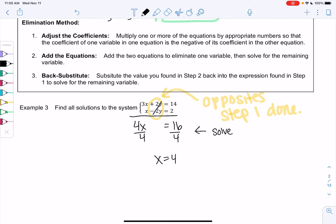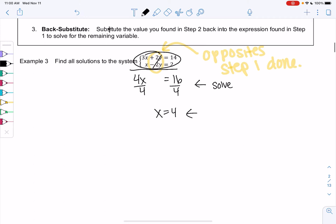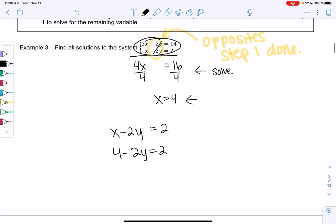And then we'll back substitute just like we did last time. So we'll substitute the value you found in step two, so that's four, into one of the expressions in step one. So you can pick either of the two equations. They should both work. The second one looks a little bit easier to me. x minus 2y equals two. So four minus 2y equals two. Minus 4 minus 4. Negative 2y is negative 2, so y will be 1.